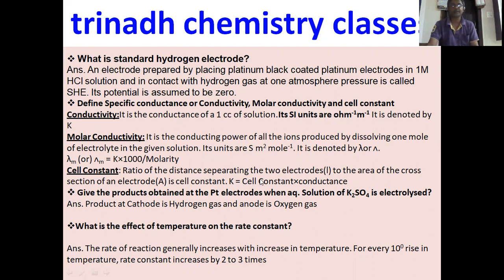Here is a diagram of the standard hydrogen electrode. Define specific conductance, molar conductivity, and cell constant. Conductivity is the conductance of one cubic centimeter of solution. Molar conductivity is the conducting power of all the ions produced by dissolving one mole of electrolyte in the given solution, denoted by lambda. Cell constant is the ratio between the distance separating two electrodes and the area of cross section.